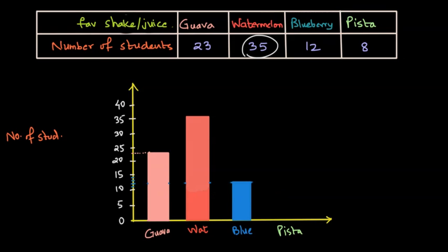And for the pista bar, the height is going to be 8. So let's draw the bar of height 8. Height 8 would be between 5 and 10, which would be something like this. And let's color it. Just so that we know, we will write the number on top of every bar, just for our own ease. And this is how we have completed the plotting of the bar graph.